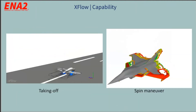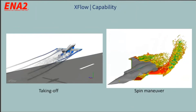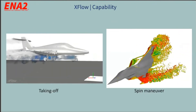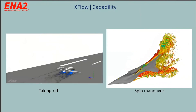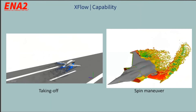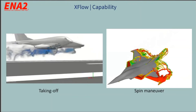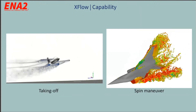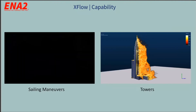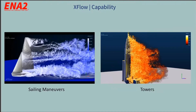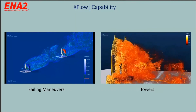Here are some examples of XFlow's capabilities. In aerospace, the examples include a takeoff simulation and a spinning rotor — you can see the eddies at the back of the plane and how the software handles moving geometry. In the marine industry, there is a sailing maneuver example demonstrating multi-phase flow and moving objects. There is also an application in construction industry simulating flow over towers.